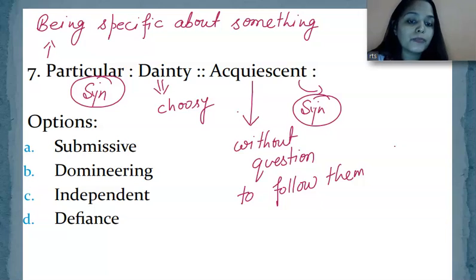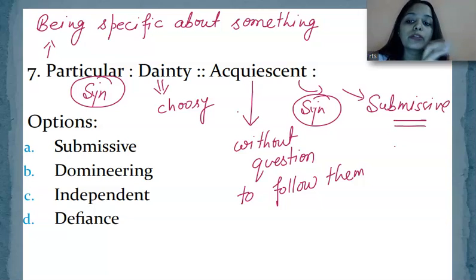You directly accepted their suggestion without question. So that is called acquiescent. In the same way, if you're looking at synonym word, we said what happens? Being submissive. Submissive in front of someone, which is given here in the options. So the correct option will be option A, submissive.